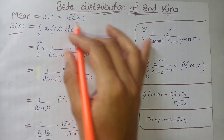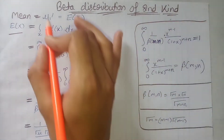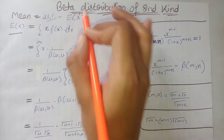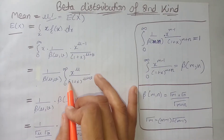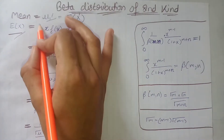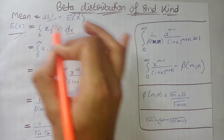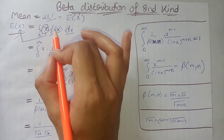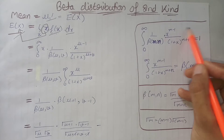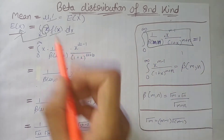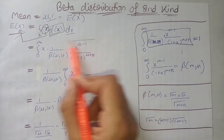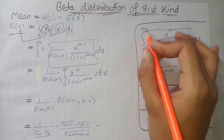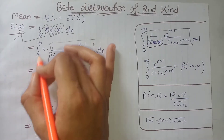We will calculate the mean of the beta distribution of the second kind, which equals the first moment about origin — that is mu₁' = E[X]. According to the definition of expectation, this equals an integration over all values of x with respect to dx. We write the term inside the expectation and the PDF of the beta distribution of the second kind. Since x takes values from 0 to infinity in this distribution, we take the limits from 0 to infinity.